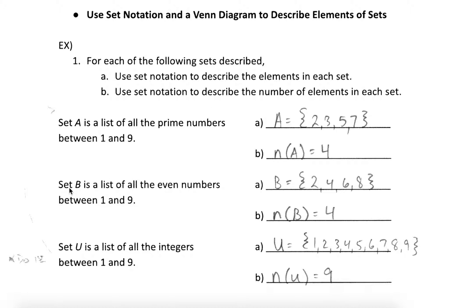Let's come up with one more set. We're going to call this set B. Set B is going to be a list of all the even numbers between 1 and 9. And so the elements of that set are 2, 4, 6, and 8. We put them inside a couple of braces and label that as set B. The number of elements in that set is 4 as well.